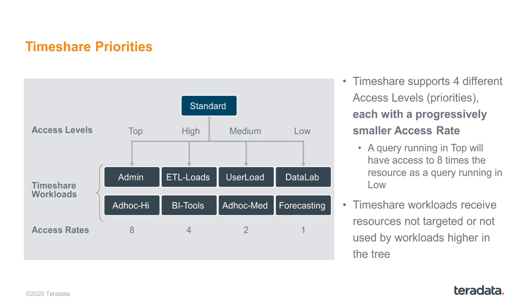For example, any query running in the top access level, which has a rate of eight, will receive eight times the resources of any query running in the low access rate, because the low queries only have an access rate of one while the top queries have an access rate of eight. Any query running in the top access level will have double the resources offered to it compared to any query running in the high access rate, because their ratio of rates is two to one. So the division of resources within timeshare depends completely on the access rate of the access level where that query's workload resides.